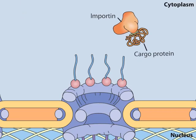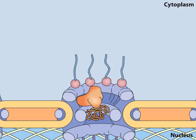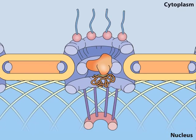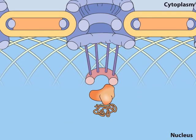With its cargo attached, importin binds to specific nuclear pore proteins in the cytoplasmic filaments. By sequential binding to more interior nuclear pore proteins, the complex is translocated through the nuclear pore.